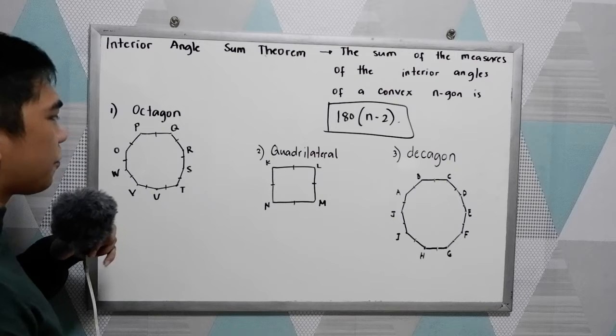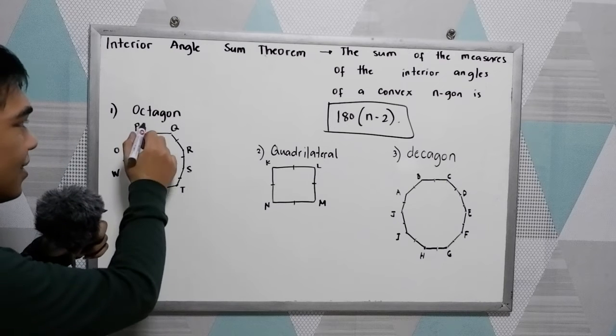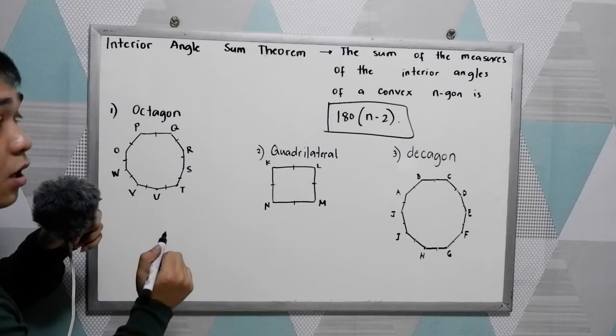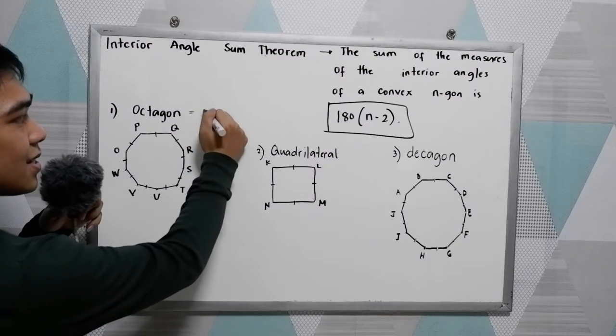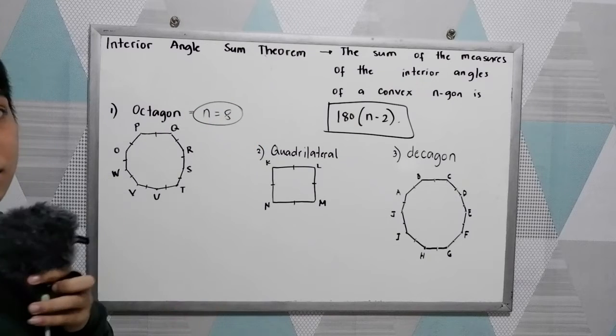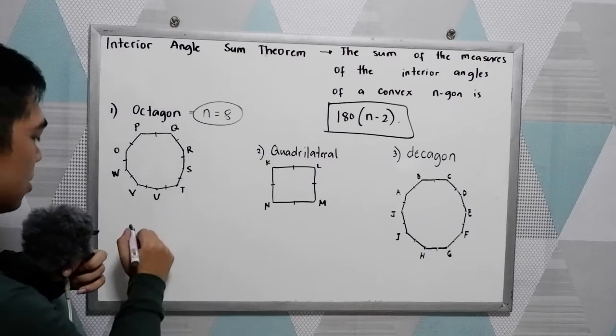Let's say we're going to find the sum total of our angles in an octagon. We know that octagon has 8 sides. So we're going to use the formula.